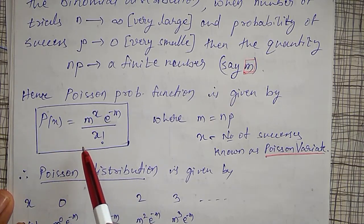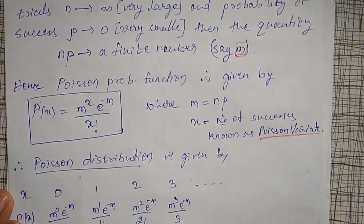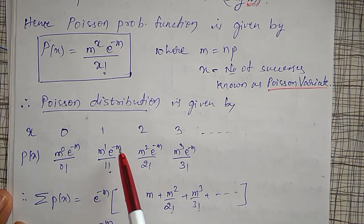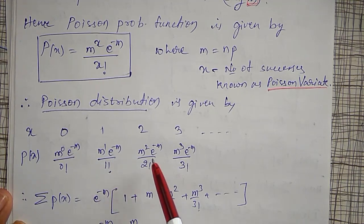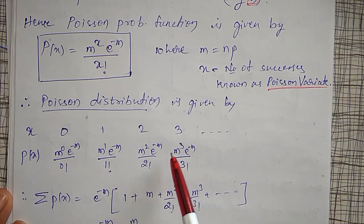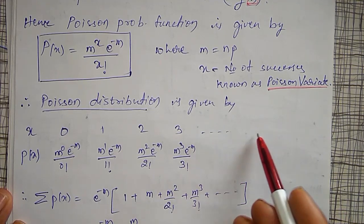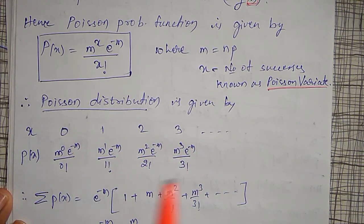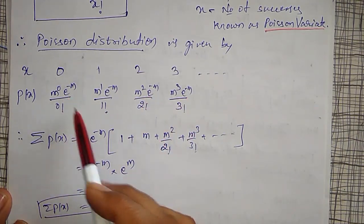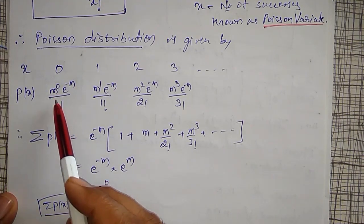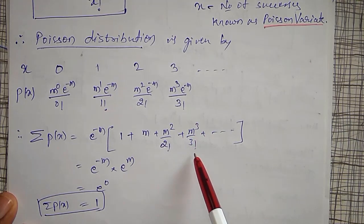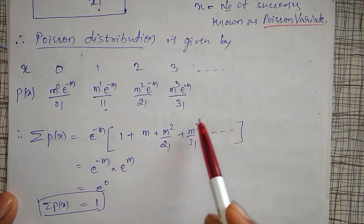To show this represents a probability distribution, for x = 0: m^0 · e^(−m) / 0!; for x = 1: m^1 · e^(−m) / 1!; for x = 2: m^2 · e^(−m) / 2!, and so on up to infinity. Adding all terms, taking e^(−m) as common, gives 1 + m + m²/2! + m³/3! + ..., which is the series expansion for e^m.